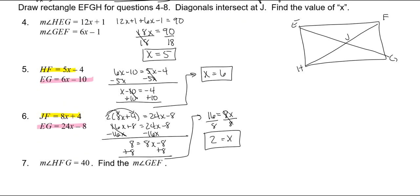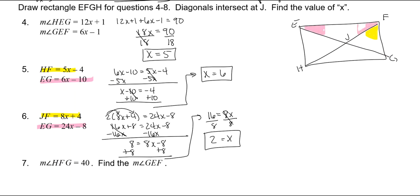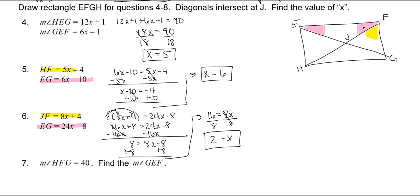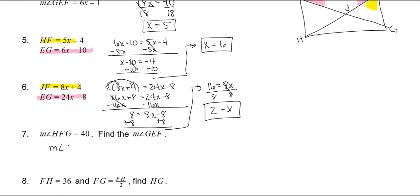For angle HFG, that's 40 degrees. We need to find angle GEF. In a rectangle, to find this angle we subtract 40 from 90, so the measure of angle GEF is equal to 90 minus 40, which is 50 degrees. For FH equals 36 and FG is FH divided by 2, we need to find HG. Since this is 90 degrees, we use the Pythagorean theorem: HG² plus FG² equals FH². FG is 36 divided by 2, which is 18. 18 squared is 324, and 36 squared is 1296. Subtract 324 from both sides: HG² equals 972. Taking the square root gives HG equals 18 square roots of 3 inches.